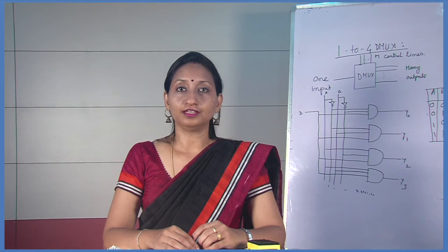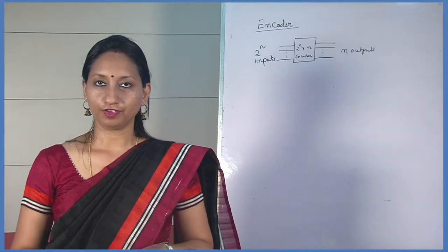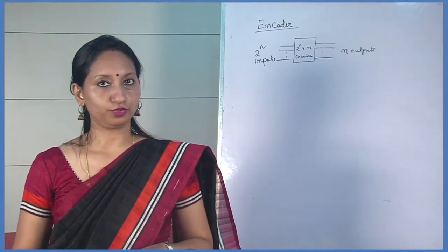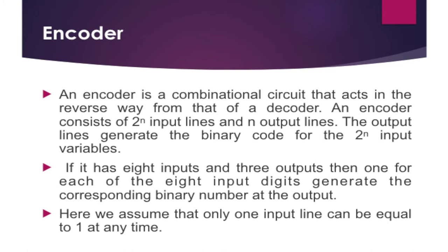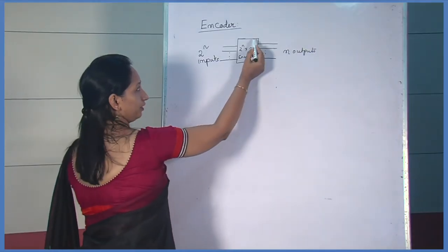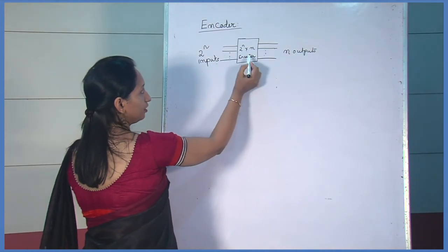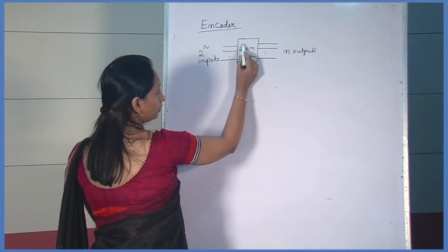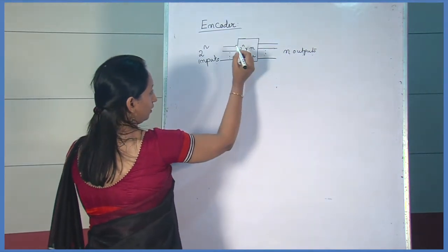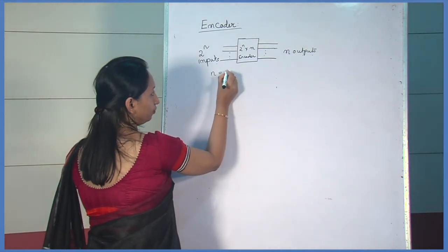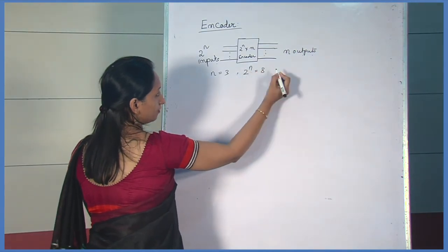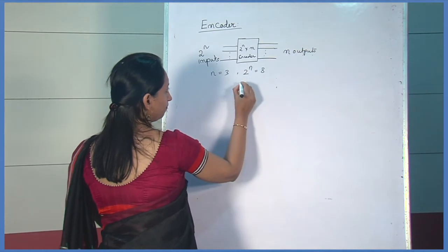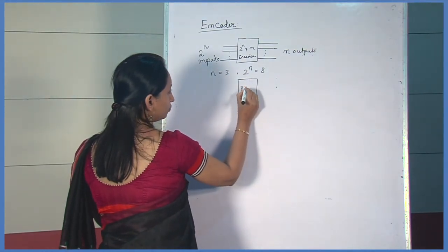Next, we shall see the encoder and decoder combinational circuit. The encoder we look at is the octal-to-binary encoder logic circuit. If 2 to the power n is the number of inputs, then the output will be n outputs. So, it is a 2^n-to-n encoder. If n equals 3, then 2 to the power n is 8, so this encoder will be an 8-to-3 encoder with 3 output lines and 8 input lines.